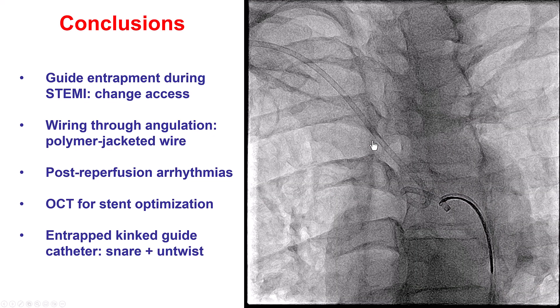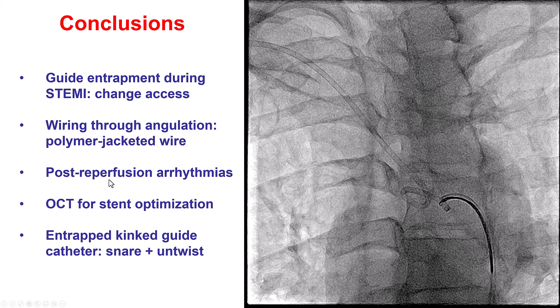Several lessons from this case. First, guide entrapment can happen if the guide gets kinked during radial access — in an emergent case like STEMI, change axis to femoral as soon as possible to open the artery, then deal with the kinked guide at the end. Second, wiring through an angulated bifurcation can be hard, but a polymer-jacketed wire can be very useful. Third, post-reperfusion arrhythmias can occur, so be ready to cardiovert or defibrillate as needed. Fourth, OCT can help optimize stent placement. Finally, for removing an entrapped kinked guide, snaring the tip to fix it, then rotating to untwist and advancing a 0.035-inch wire through it, worked in our case. Thank you.